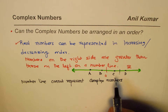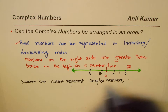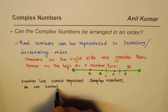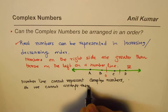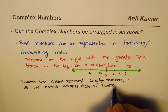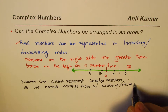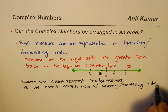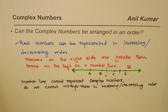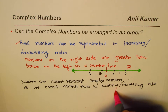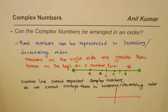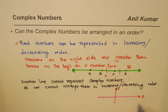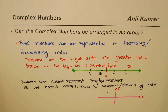Since complex numbers cannot be represented on a number line, we cannot arrange them in increasing or decreasing order. To represent complex numbers, we need a plane — with imaginary and real parts as axes. Just as we cannot arrange all points in a plane into a single order, complex numbers cannot be written in increasing or decreasing order.